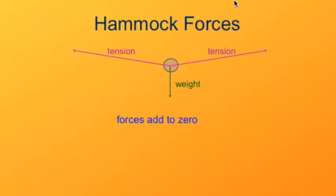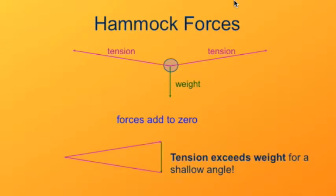Since they add to zero, we can line up all the vectors head to tail, that's how we add them together, and they should end up where we started. So here we show the force of weight down, and then two forces of tension, one that's slightly up and to the left, and one that's slightly up and to the right. We see that if the angle is shallow, the tension in a rope is significantly more than the weight of the person.